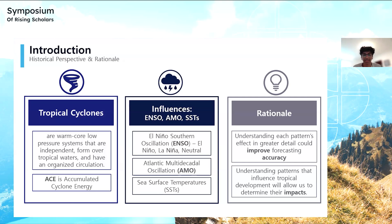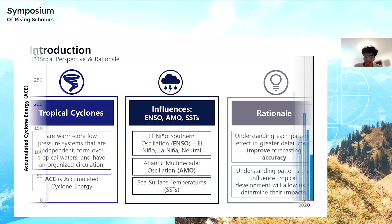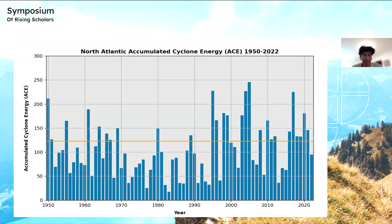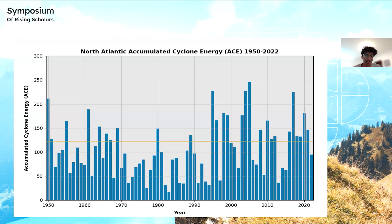Next, ACE — Accumulated Cyclone Energy — is an index that takes the frequency and intensity of hurricanes over a given year. As you can see by the orange line, the mean value is 123. From 1950 to 1970, we saw around average ACE. From 1970 to 1995, we saw below average. And from 1995 to the present, we've seen above average ACE compared to the mean, which will be important further in the presentation.